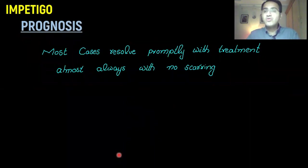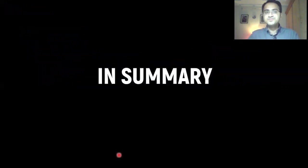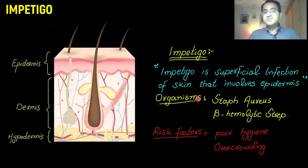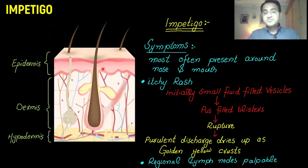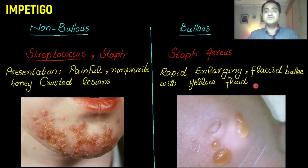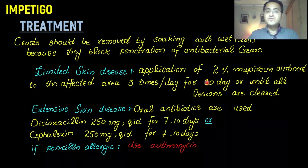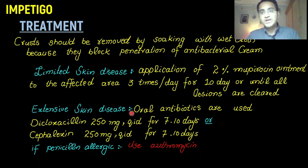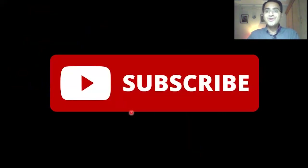Prognosis is excellent — most cases resolve with treatment, and almost always without scarring, which is one of the good things about impetigo. In summary: impetigo is a superficial infection of the epidermis caused by Staph and Strep. It presents as fluid-filled vesicles that rupture and dry as crusts. Non-bullous type is caused by Strep and presents as honey crusts. Treatment includes crust removal; mupirocin ointment for limited disease and oral antibiotics for extensive disease.